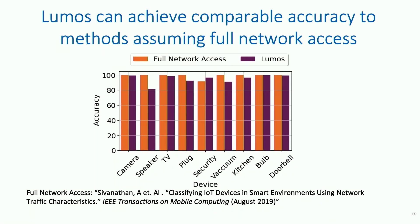For each device on the x-axis, we plot the accuracy of our system, Lumos. As you can see, Lumos achieves just slightly lower accuracy than the prior work, and that is to be expected because the prior work assumes root access to the router and extracts all the privileged header fields such as IP, DNS, NTP, etc. We are working with only encrypted Wi-Fi 802.11 headers.